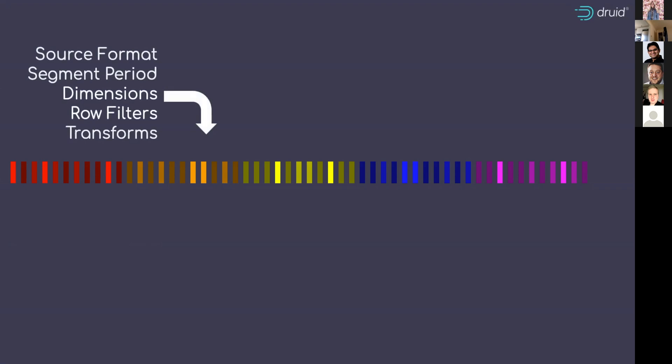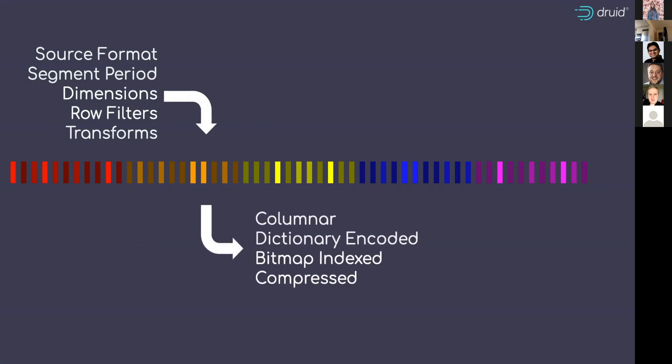The configuration for all of this is called the ingestion specification, in JSON format. But now we've got a data loader that specifies the source format, the segment period, the dimensions, the row filters, and any transforms that you want to do.